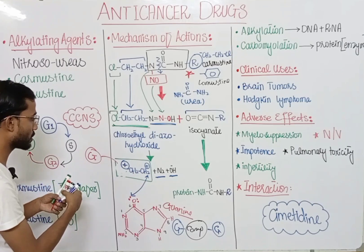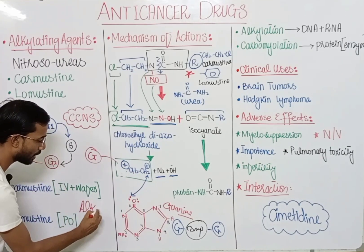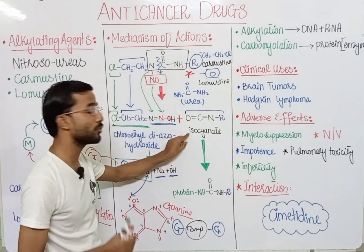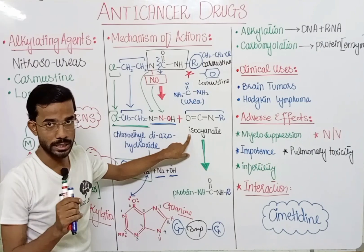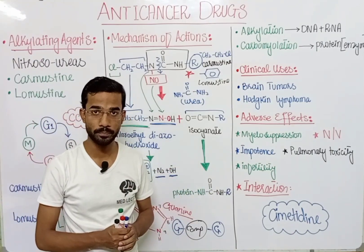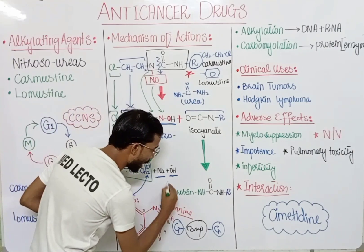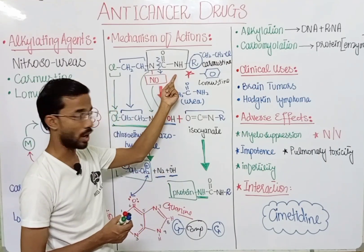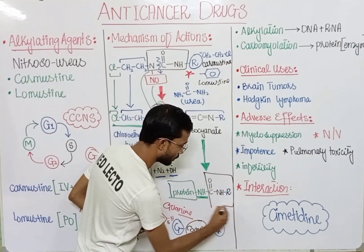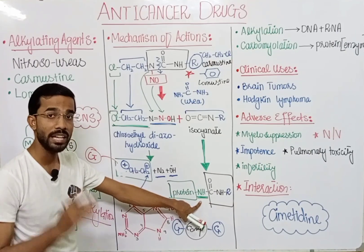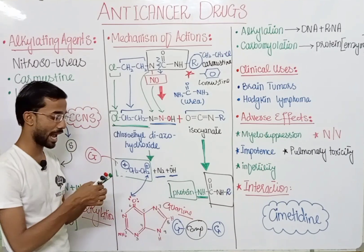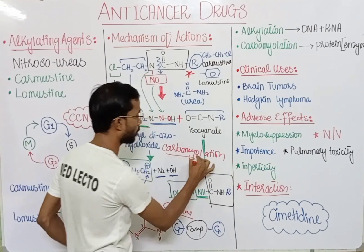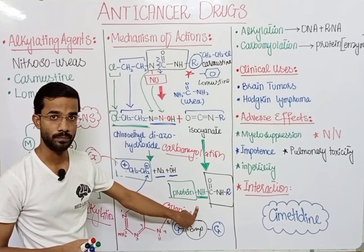The next process involves the isocyanate. The isocyanate will attach to the amino group of amino acids, because amino acids are actually part of proteins. The protein having an amino group will attach to the isocyanate, and this process is actually called carbamylation. This ultimately inactivates the protein.